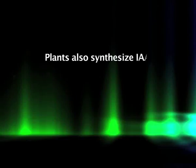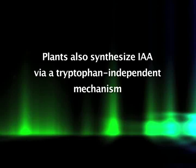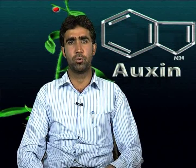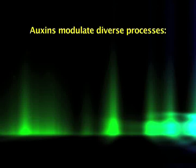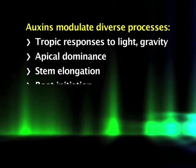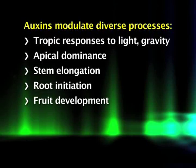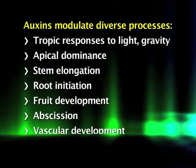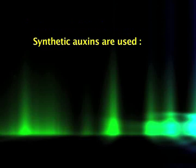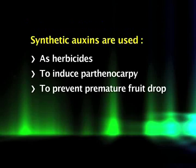Plants are also known to synthesize IAA via a tryptophan-independent mechanism. Auxins are defined by their ability to induce elongation in coleoptyles and stem sections, and they affect almost every aspect of plant growth and development. They modulate diverse processes such as tropic response to light and gravity, apical dominance, stem elongation, root initiation, fruit development, abscission, vascular development, and growth in tissue culture.